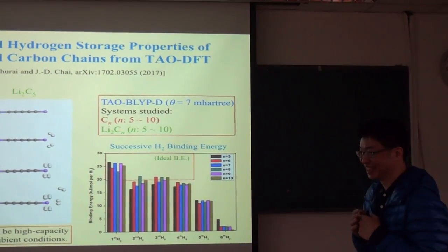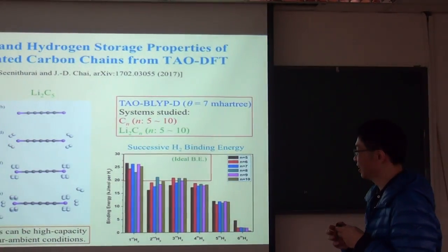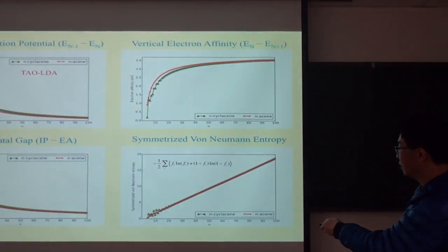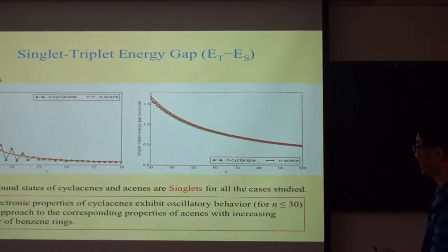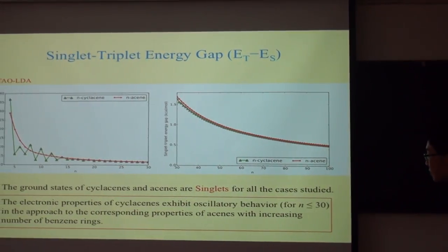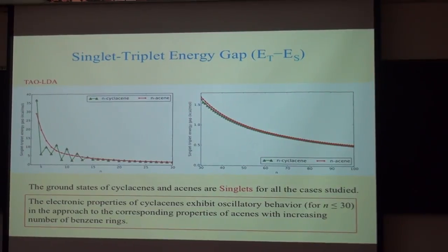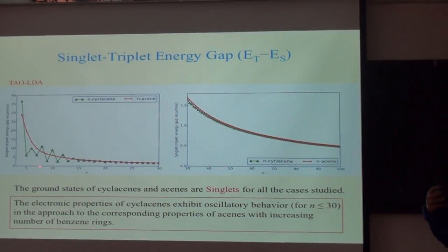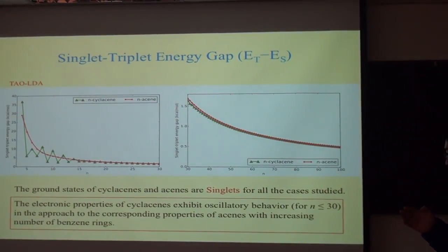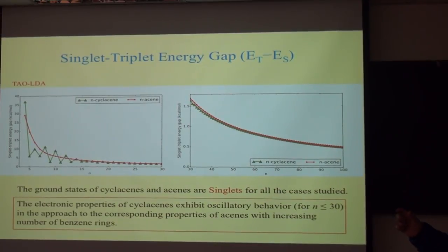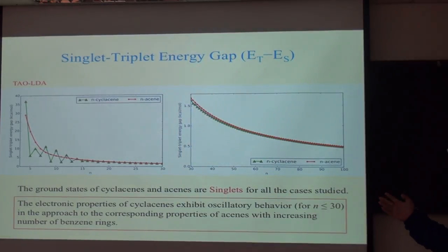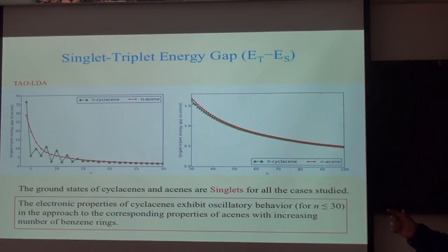Even in tau DFT there is still some oscillation for cyclocene. The question was whether this is a real feature or an artifact. The speaker explained that earlier work using model Hamiltonians already qualitatively predicted this oscillation, and since cyclocene has not yet been experimentally synthesized, the oscillation is argued to be a genuine physical feature based on model Hamiltonian studies.